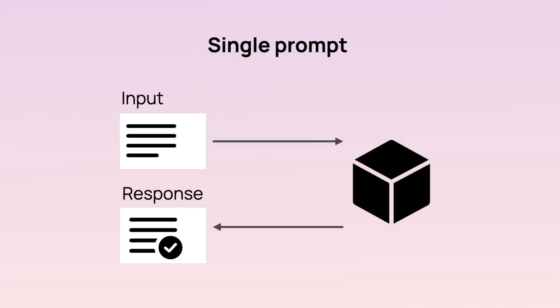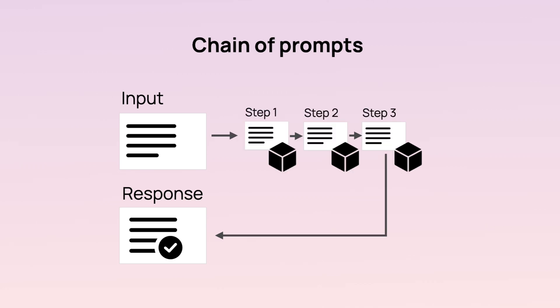Some of these features are quite simple. To generate e-commerce item descriptions, you might need a single, well-crafted prompt. But often things can get more complex — for example, you might need to chain multiple prompts together.